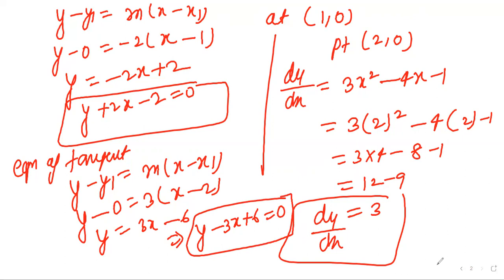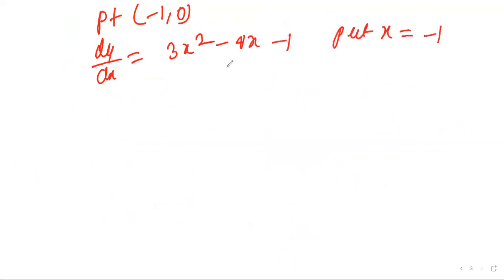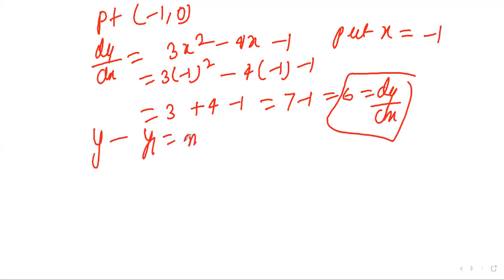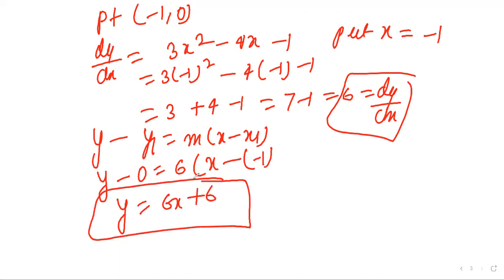The next third point is minus 1 comma 0. The equation is 3x squared minus 4x minus 1. Put x equal to minus 1: 3 times (minus 1) squared minus 4 times (minus 1) minus 1, so 3 plus 4 minus 1, which is 6. So the slope is 6. Equation of tangent: y minus 0 equal to 6 times (x minus (minus 1)), so y equal to 6x plus 6. This is the next equation of tangent.